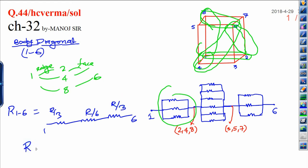Now, all are in series. Then, if you calculate it, resistance between 1 to 6 is 5R on 6.